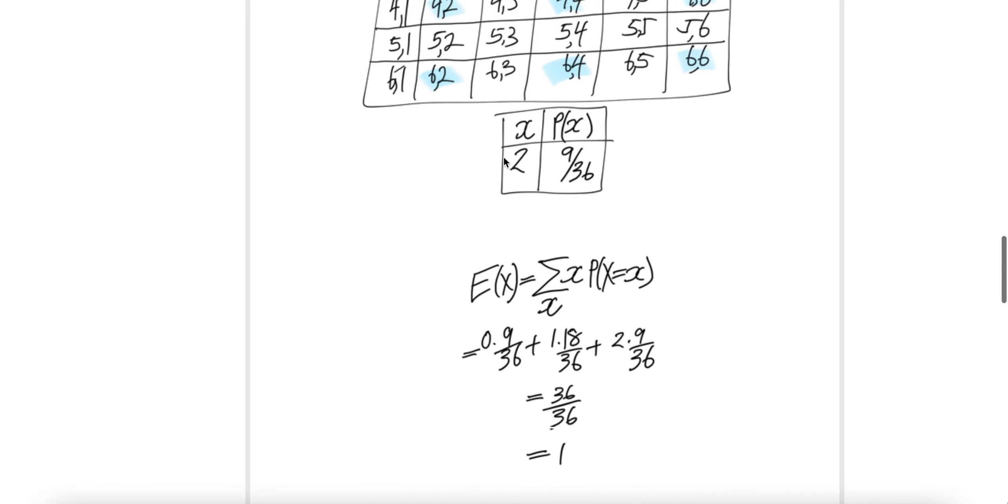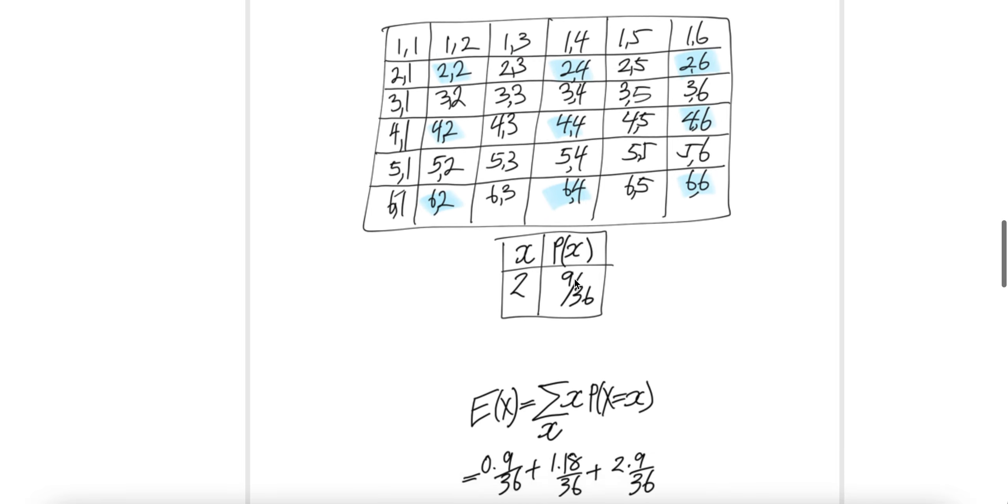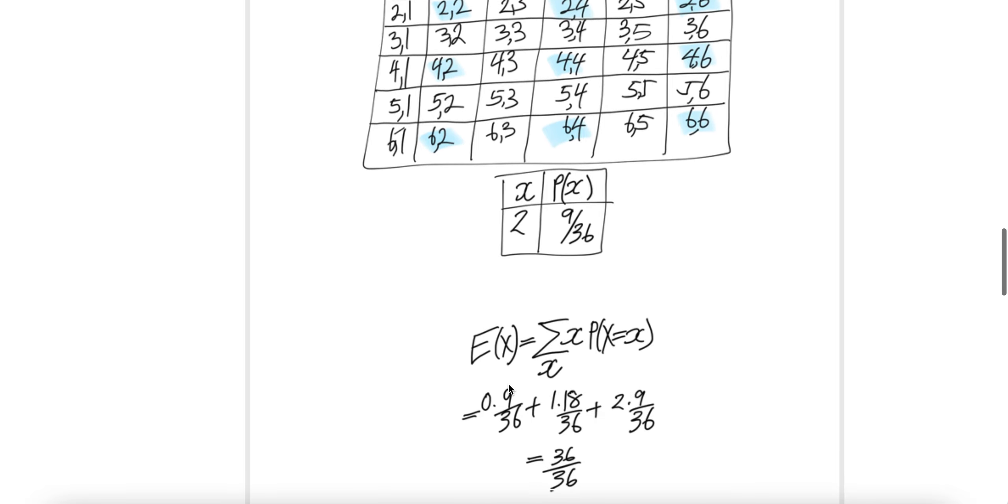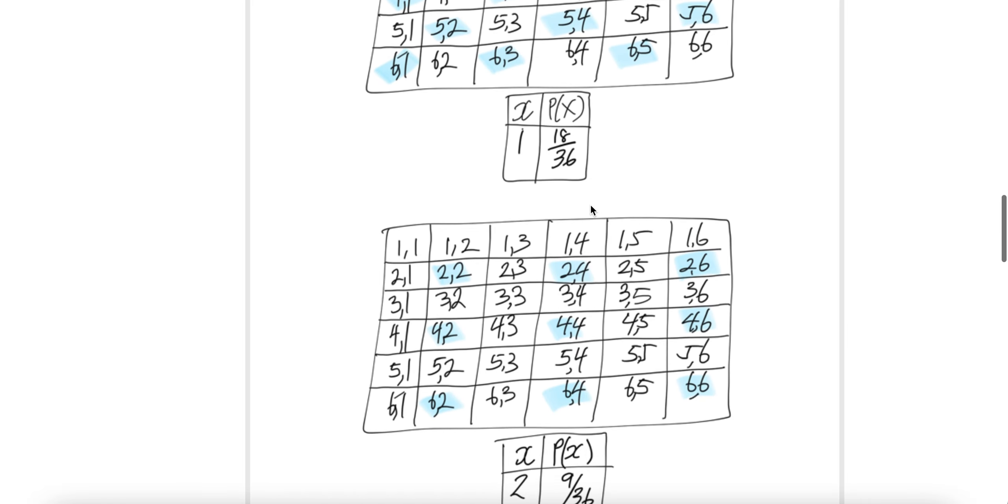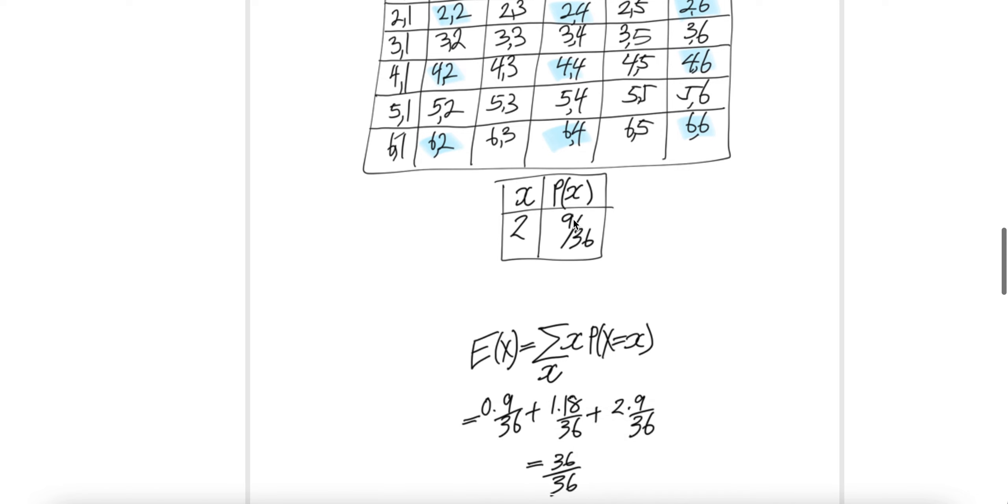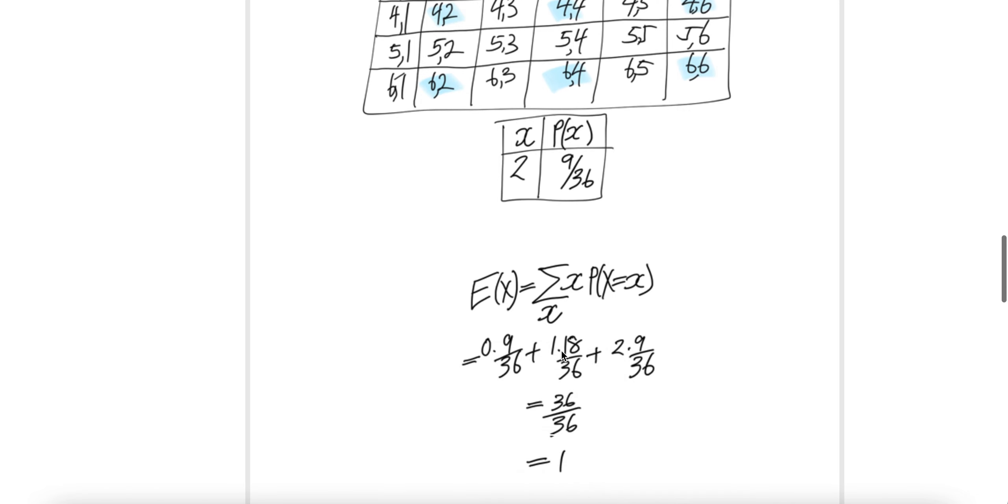Now with that, let us compute the expectation of X, given by this formula. X goes zero, one, two. And then this one will be probability of X equal to zero. You saw how to get that. Here, nine over 36. And 18 over 36 will be the one. And then the two will be nine over 36. Put the probability and then put the value zero, one, two. You know how to do the math. The expectation of X is equal to one.